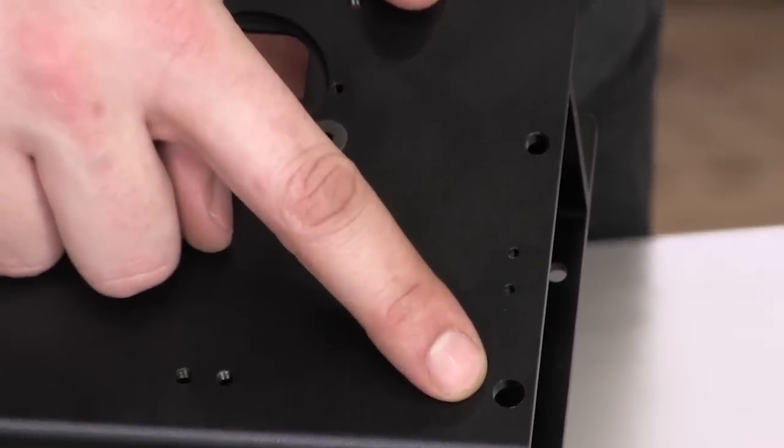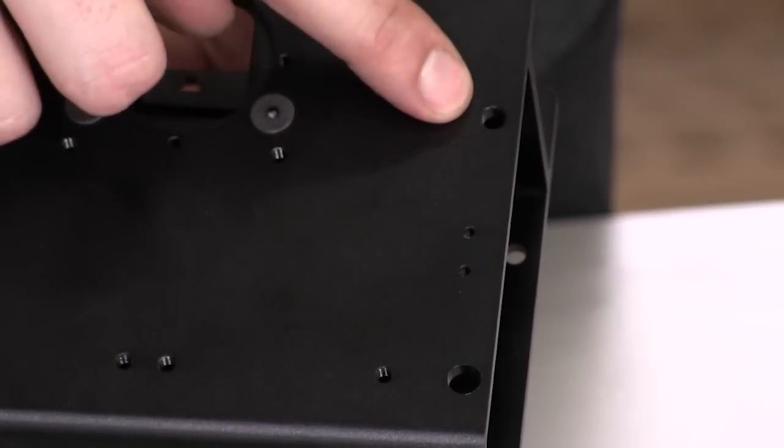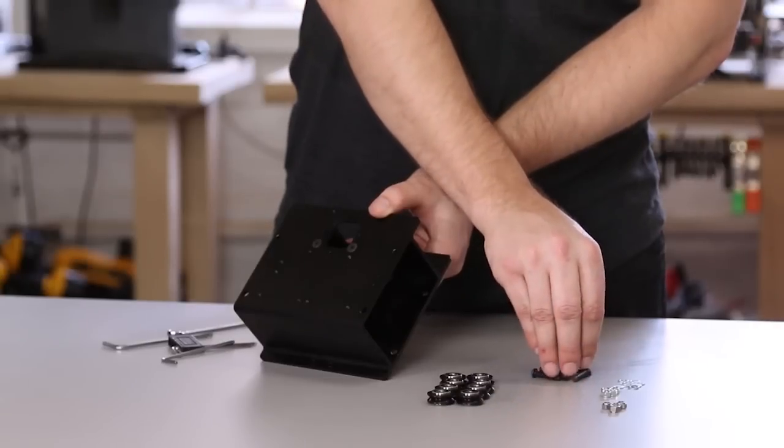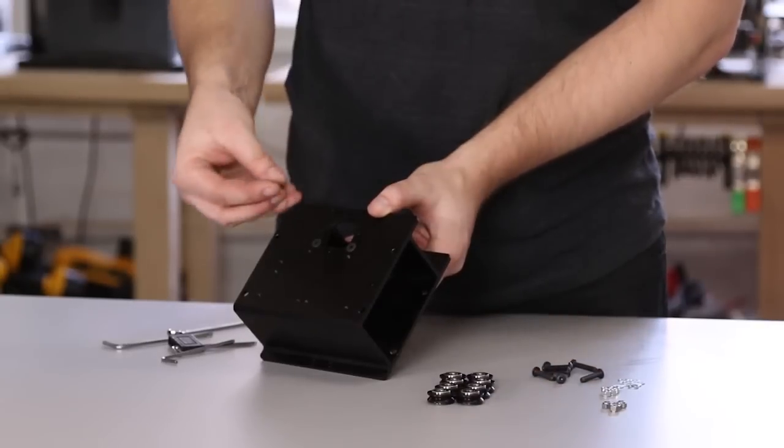Note that there are two sizes of holes that will accept V-wheels on the X-carriage. One of them is larger, that's for eccentric nuts. The other is smaller, that's for nylock hex nuts.